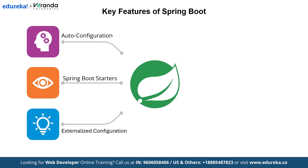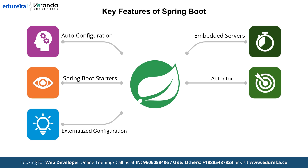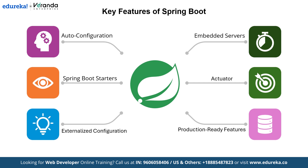Spring Boot also supports externalized configuration in properties and YAML files, ensuring your application can adapt to different environments like development, testing and production without code changes. Next are Embedded Servers — Spring Boot comes with built-in servers like Tomcat, Jetty and Undertow, allowing you to run your application as a standalone JAR without needing a separate server setup. The Actuator feature provides built-in endpoints to monitor and manage your applications — you can check health status, metrics and other diagnostics with ease. Finally, Spring Boot provides production-ready features like metrics, health checks and externalized logging right out of the box.